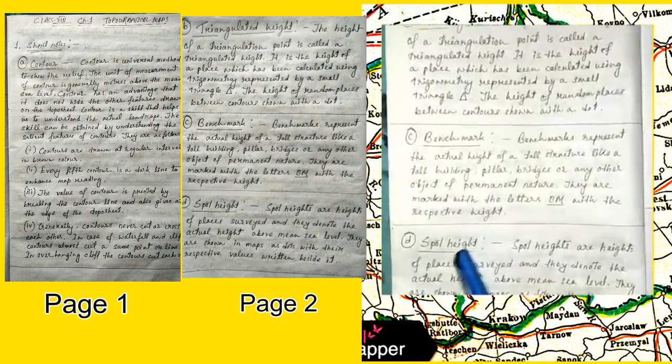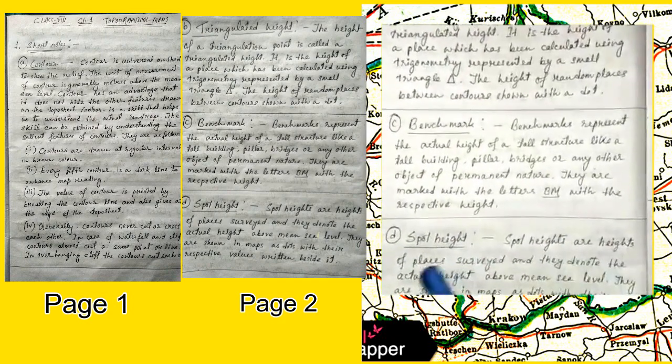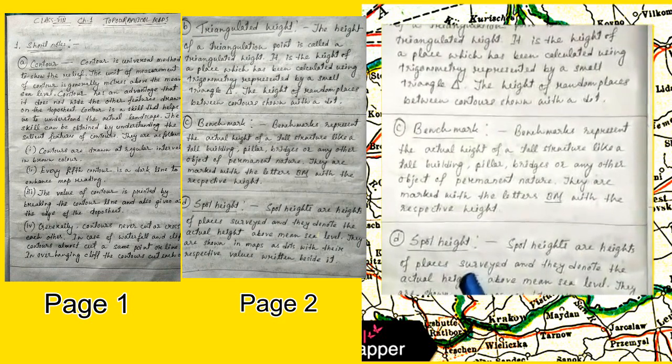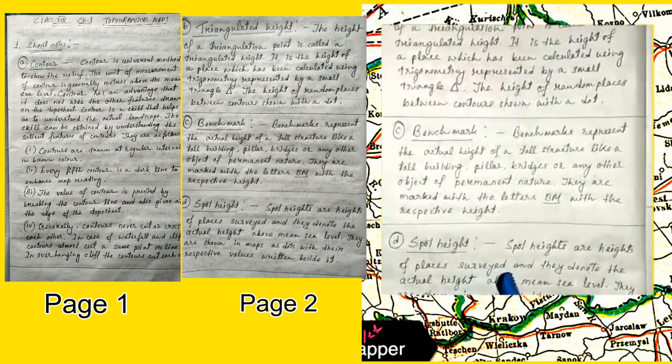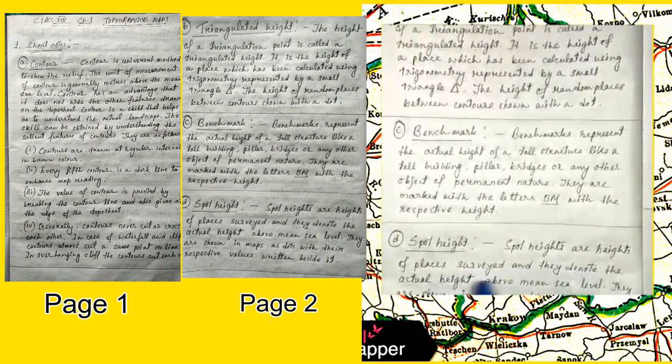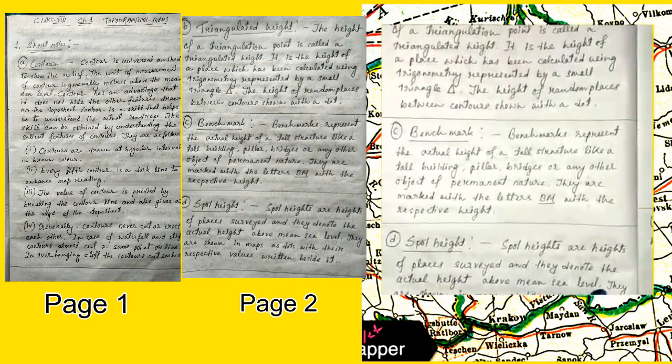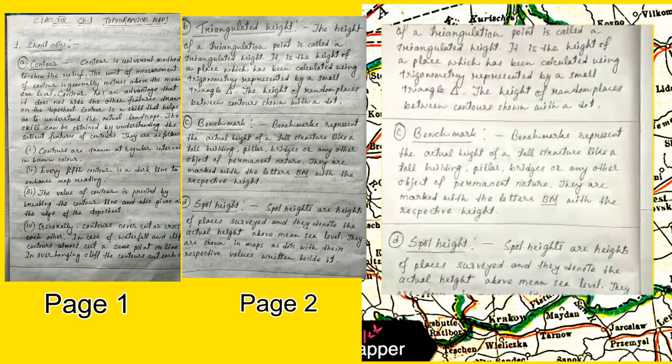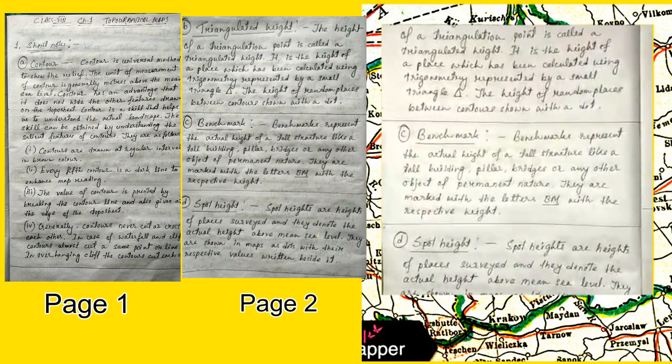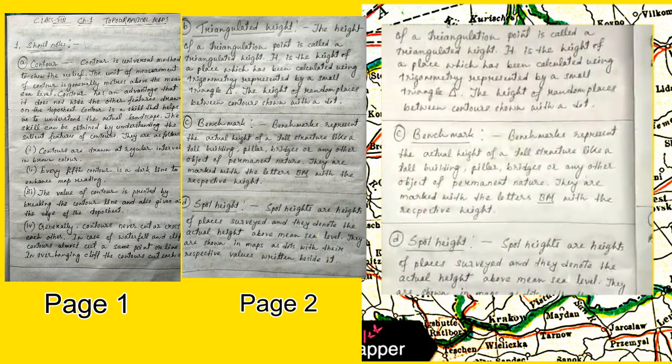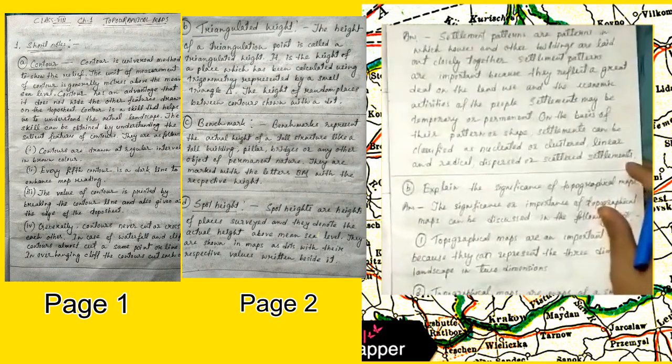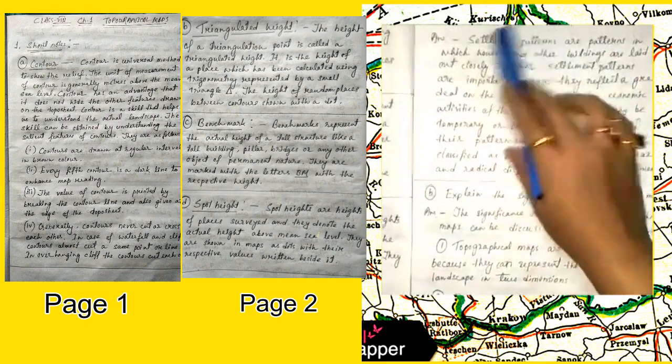Number D: Spot Height. Spot heights are heights of places surveyed, and they denote the actual height above mean sea level. They are shown in maps as dots with their respective values written beside them.